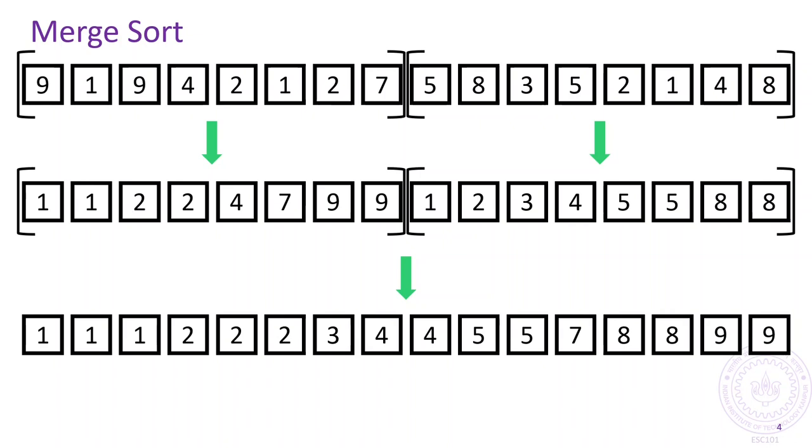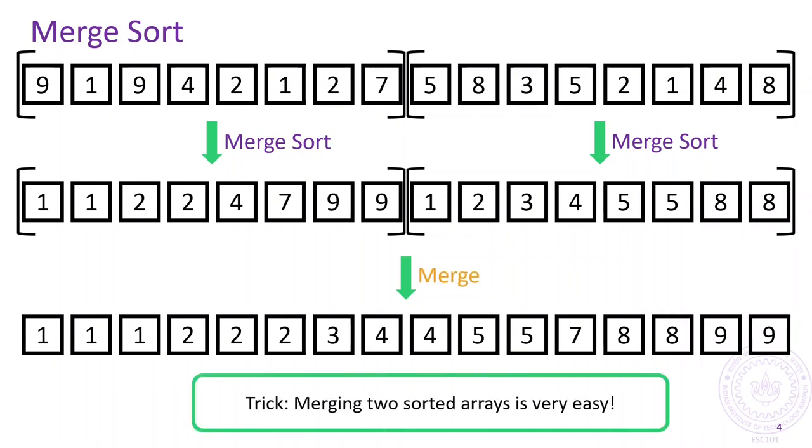This merging operation is perhaps how the sorting algorithm got its name. Merge sort is clever in that it recursively calls itself to sort the smaller arrays. However, we need to find a way to merge the two sorted smaller arrays, but fortunately this turns out to be a fairly simple task as well.